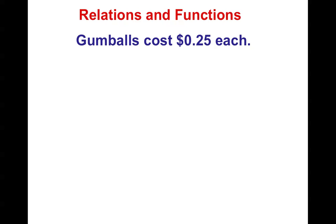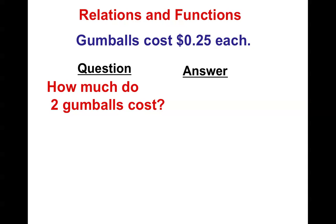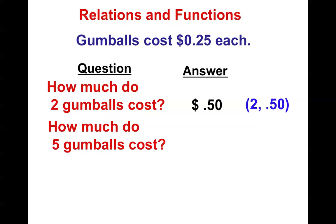Let's talk about the relationship between gumballs and their cost. If I have gumballs and I know that they are $0.25 each, I can ask myself a question and get an answer. How much do gumballs cost? Answer: $0.50 — you can check to see if you have enough money and know if you can get two gumballs. How much do five gumballs cost? Answer: $1.25. Notice how I can make this an ordered pair — the five stands for the number of gumballs, and $1.25 is the cost.